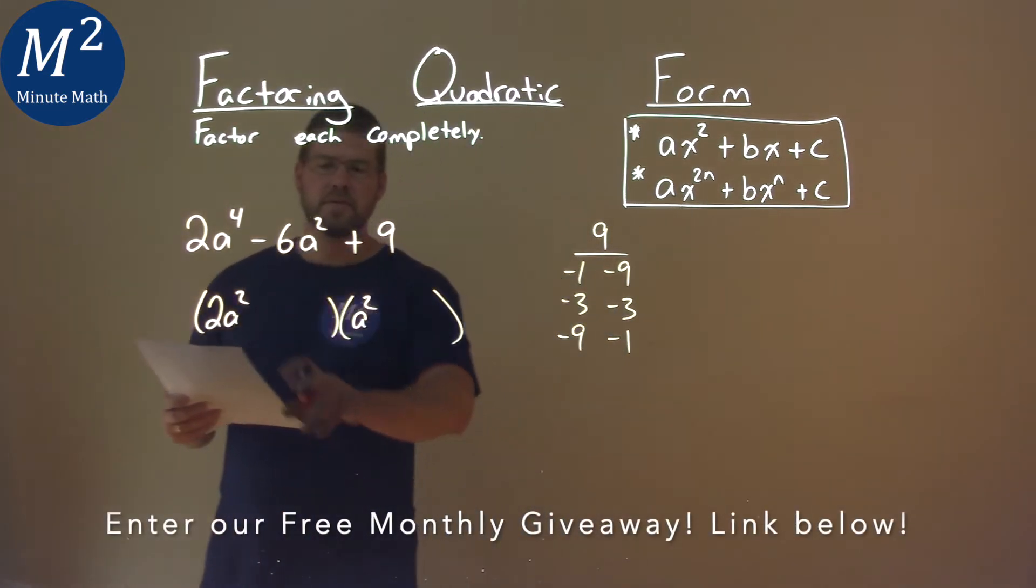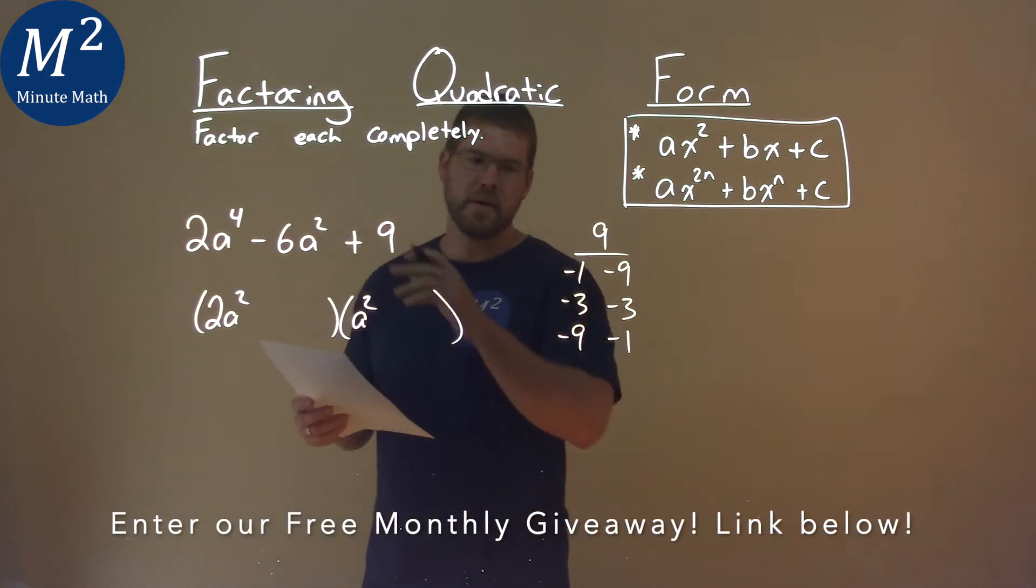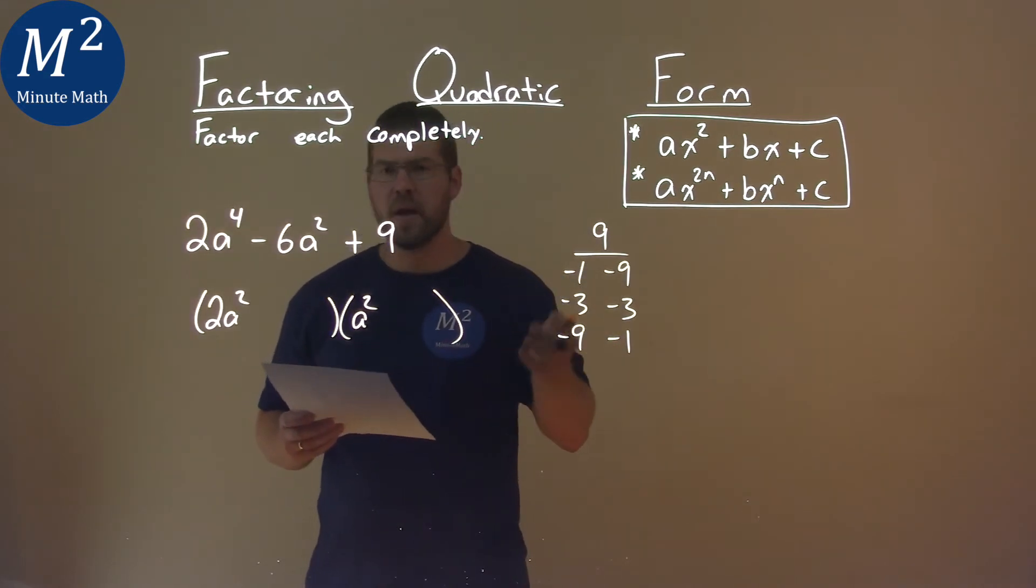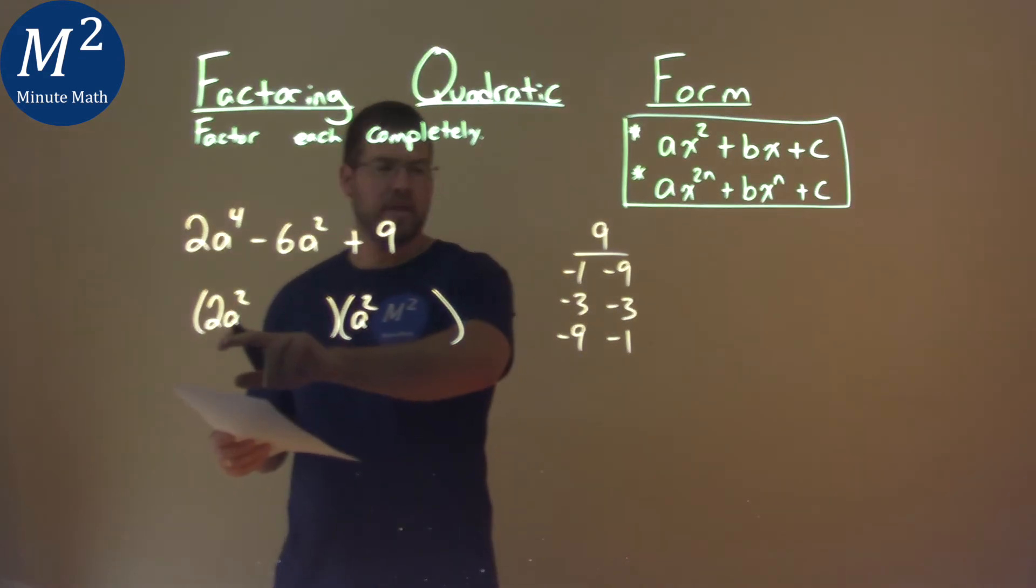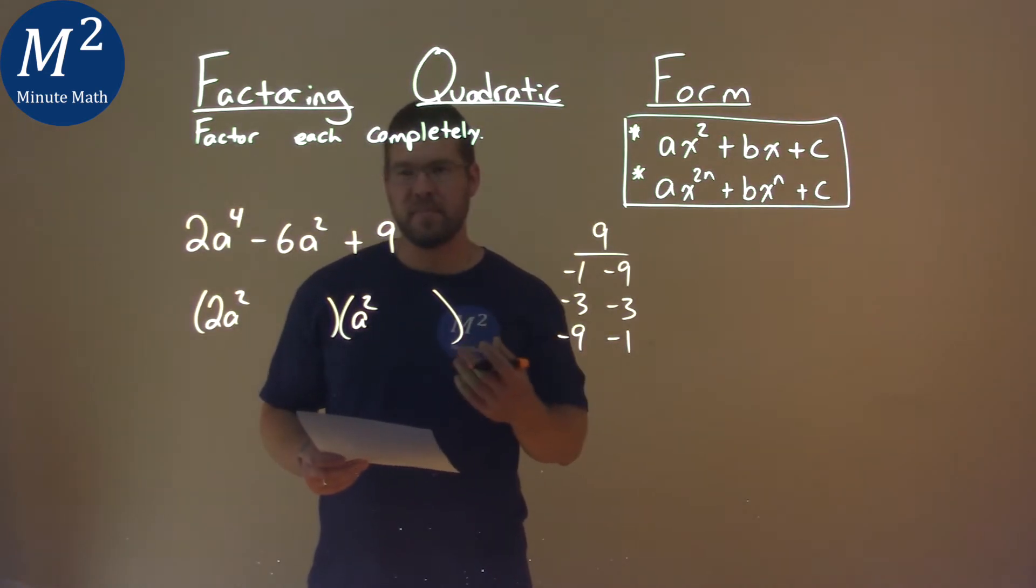So now we have to find 2 times the first number plus 1 times the second number gets me negative 6. And if you're like me you had a hard time finding that. There wasn't any pair that 2 times the first number plus 1 times the second number added up to be a negative 6.